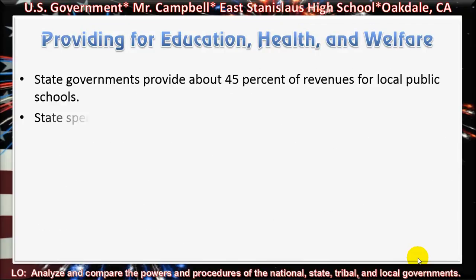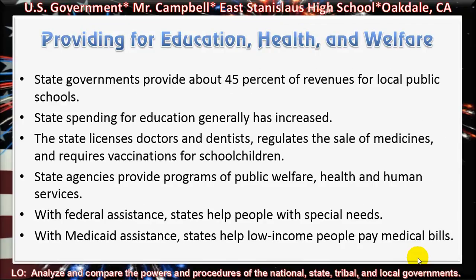Providing for education, health, and welfare. State governments provide about 45% of revenues for local public schools. State spending for education generally has increased. The state licenses doctors and dentists, regulates the sale of medicines, and requires vaccinations for school children. State agencies provide programs of public welfare, health and human services. With federal assistance, states help people with special needs. With Medicaid assistance, states help low-income people pay medical bills.